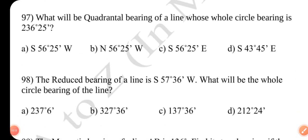Question number 97. What will be the quadrantal bearing of a line whose whole circle bearing is 236 degrees 25 minutes? Answer is A South 56 degrees 25 minutes west.